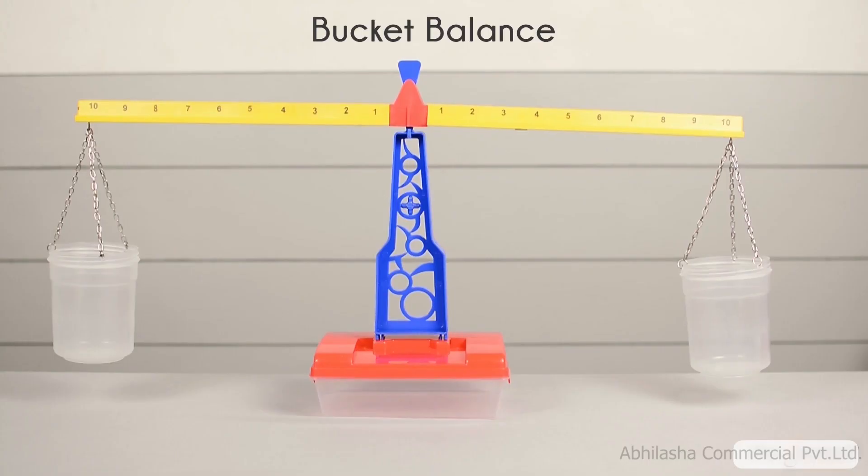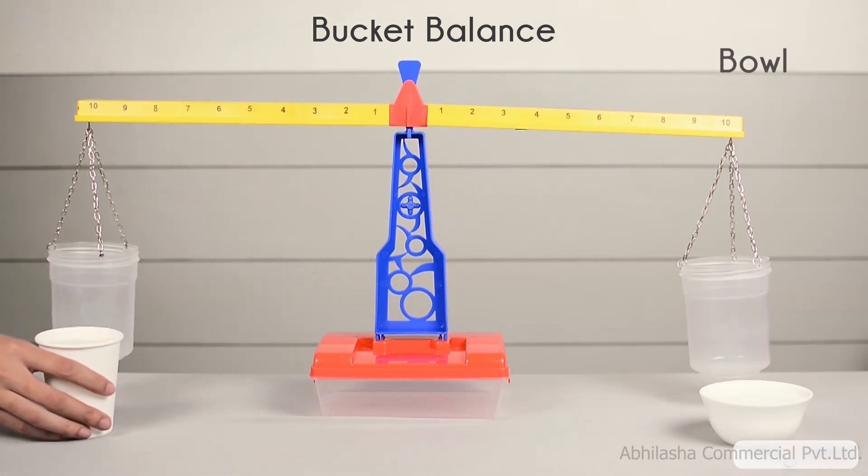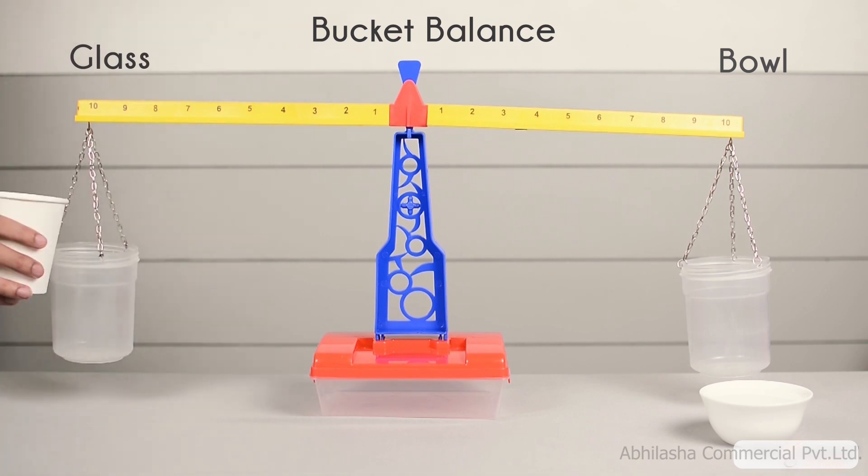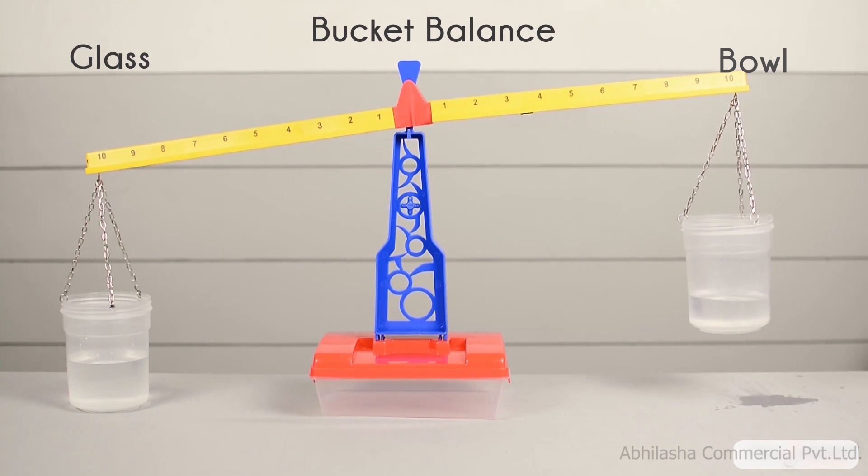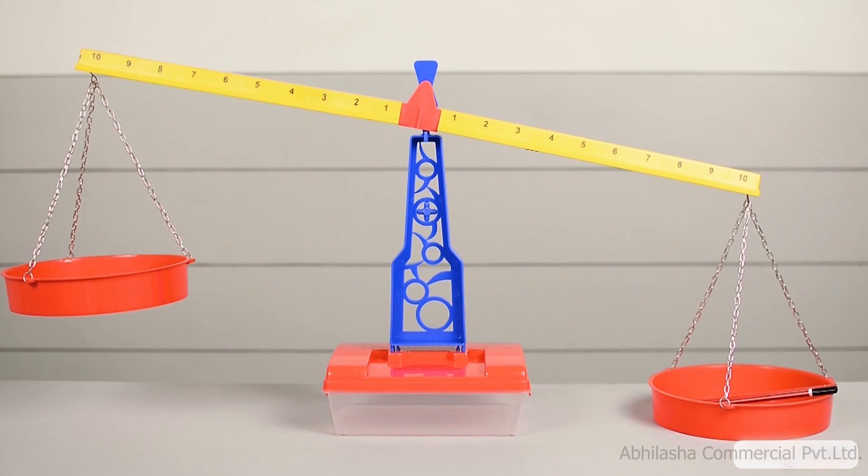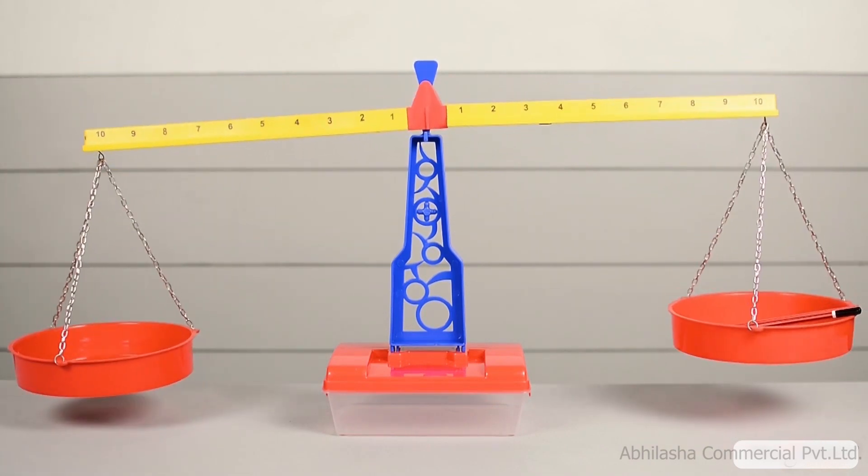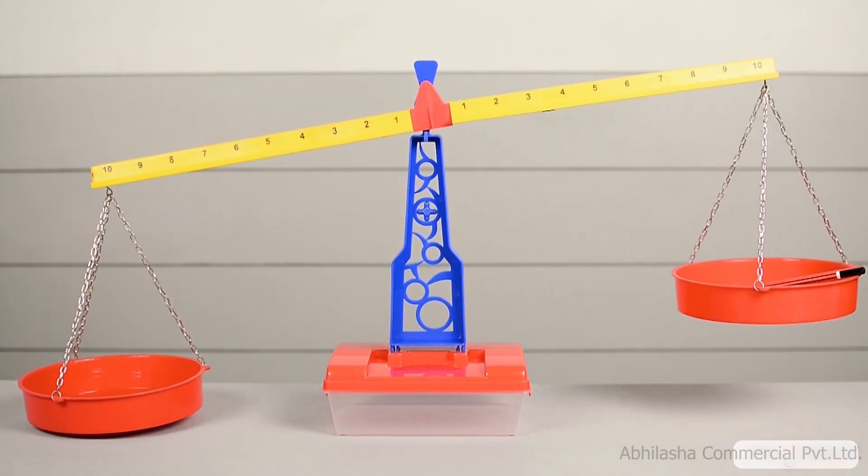We now have a bucket balance to compare and measure volumes. Let's look at how much water is in a bowl versus how much is in a glass. When the water from the bowl and the glass are poured into separate buckets, it is clear that the glass holds more water than the bowl. As a result, this pan and bucket balance invites students to explore with solid and liquid object comparisons and measurements.